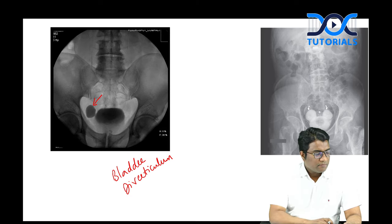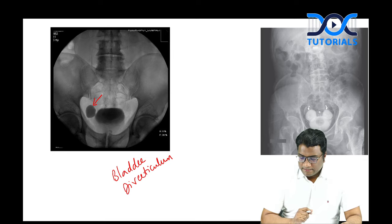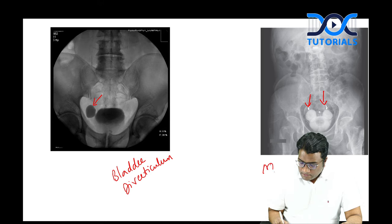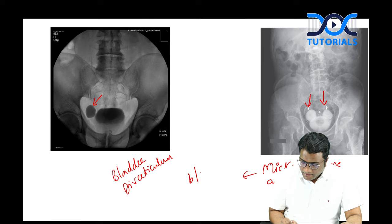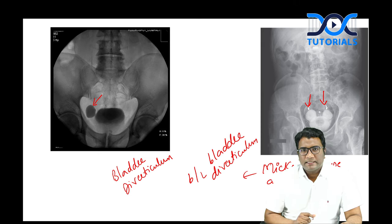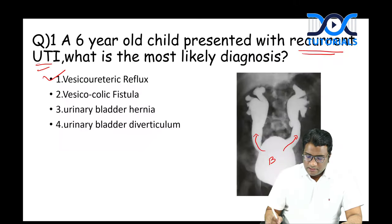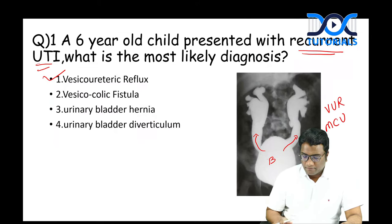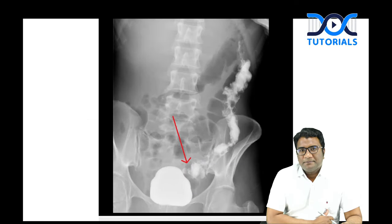When you have bilateral diverticula from the bladder, this gives the Mickey Mouse appearance. Bladder diverticula are small outpouchings from the bladder wall. The image in the exam showed vesico-ureteric reflux on MCU. Another image showed contrast from the bladder going into the sigmoid colon — that is vesico-colic fistula.